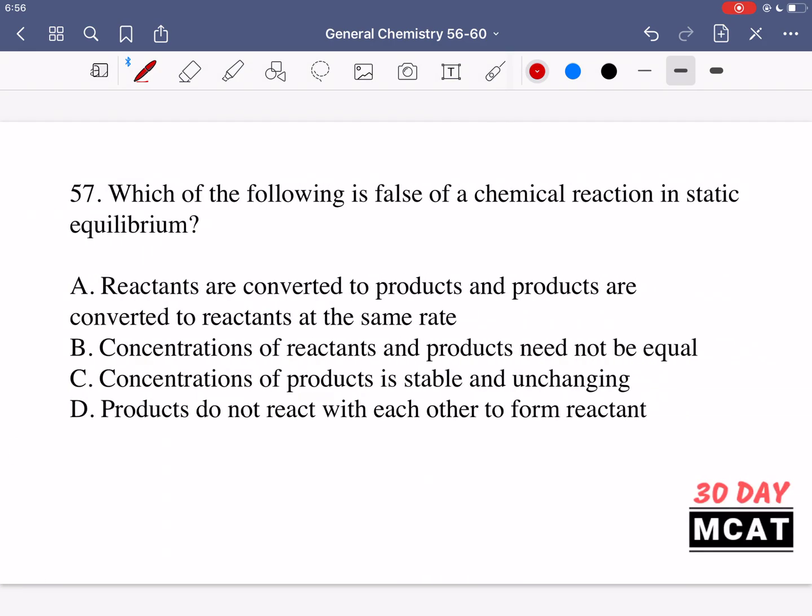In question 57 we're asked which of the following is false of a chemical reaction in static equilibrium. Most of the time in chemistry when we think about equilibrium we're thinking dynamic equilibrium, which is when we've reached an end point. The concentrations of reactants and products aren't changing overall, but there is a little bit back and forth where some reactants are turning into products and vice versa, so their concentrations are changing slightly over time but the net change is zero.